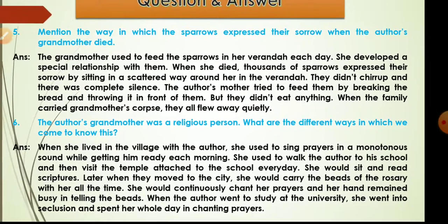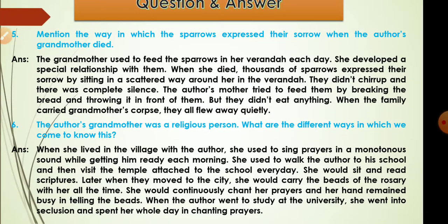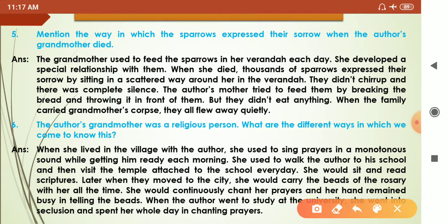Next question: mention the way in which the sparrows expressed their sorrow when the author's grandmother died. The grandmother used to feed the sparrows in her veranda every day. She developed a special relationship with them. When she died, thousands of sparrows expressed their sorrow by sitting scattered around her in the veranda. They didn't chirp and there was complete silence.